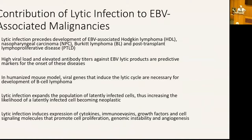Lytic genes encode and induce expression of several cytokines. In the case of EBV, it expresses viral IL-10, which is an immunosuppressant. In the case of KSHV, it expresses viral IL-6. So there are several products of these lytic genes that could be important for tumor progression. We're really interested in understanding lytic infection and how the virus produces new virus particles — if we can block that, we've achieved something significant.